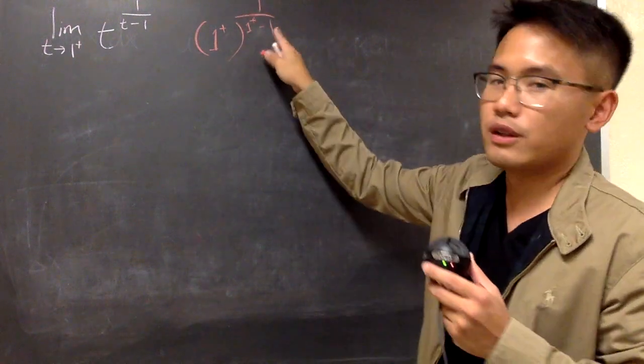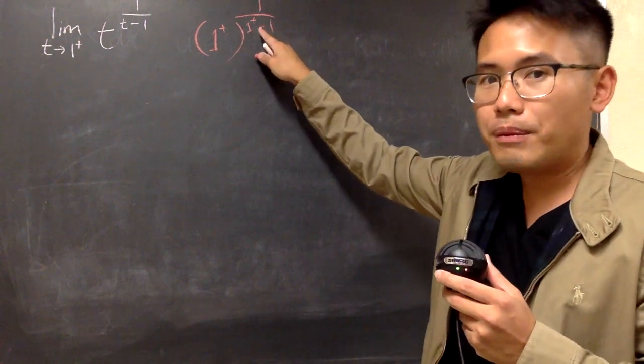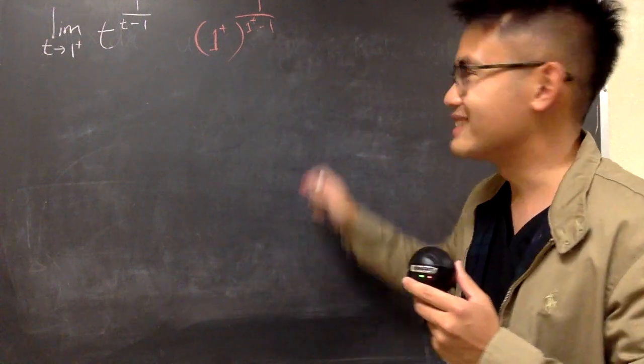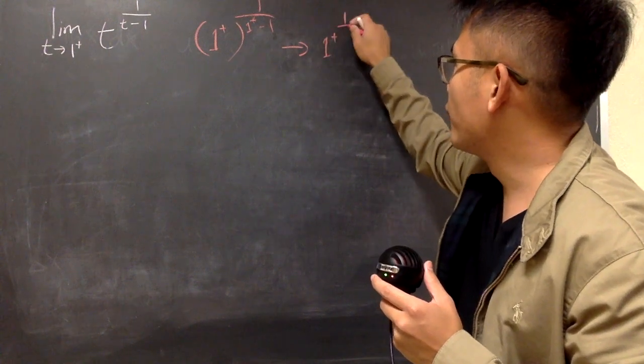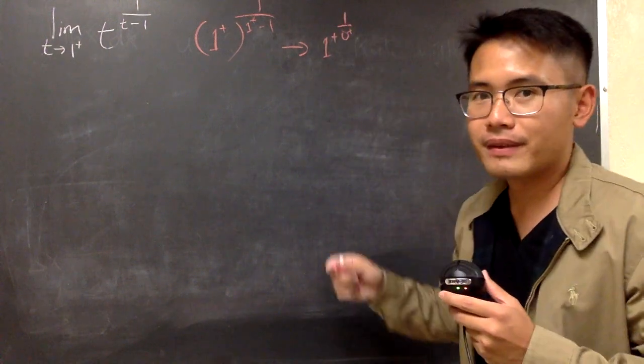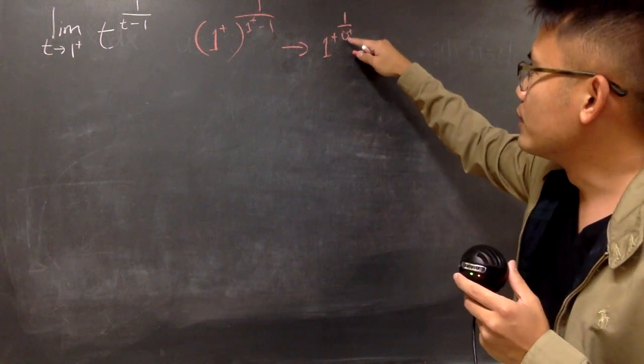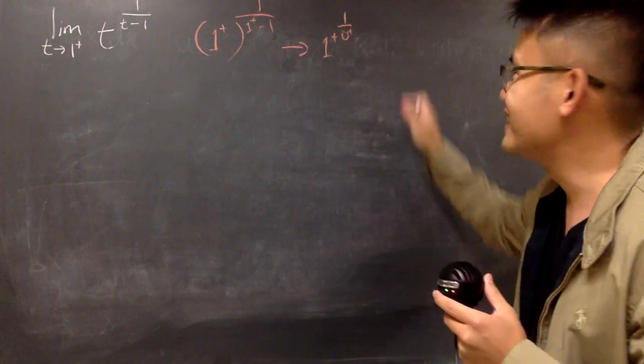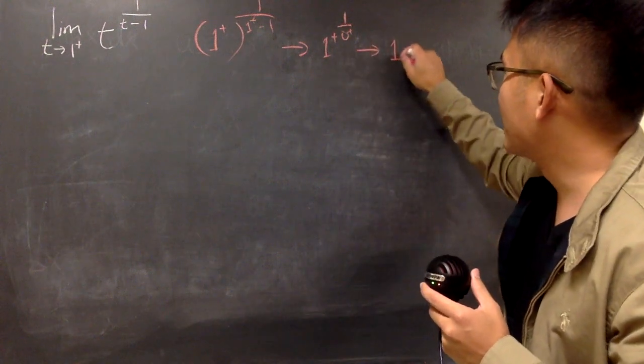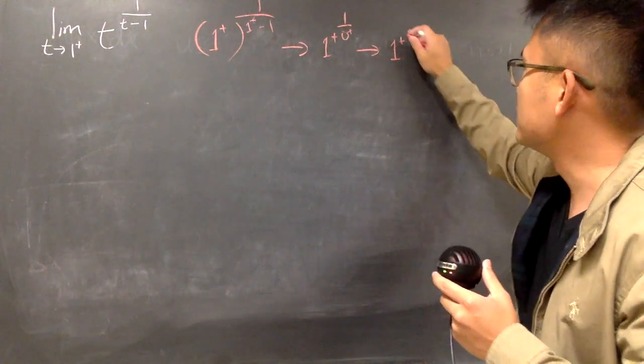And we have to kind of reason this out first. First, 1 plus minus 1 is 0 plus. So this goes to 1 plus raised to the 1 over 0 plus power. And when you have a non-zero number over 0 plus, and both of them are positive, you get positive infinity. So this goes to 1 plus raised to the infinity's power.